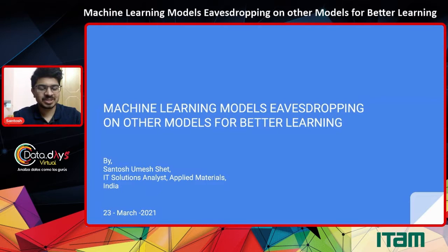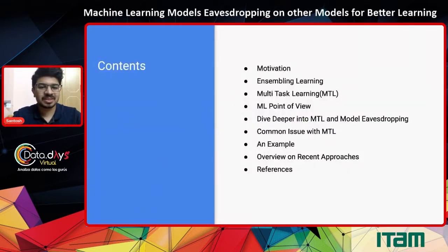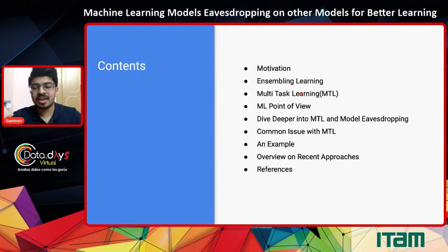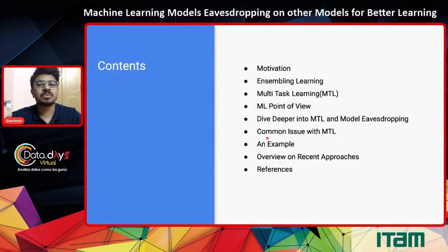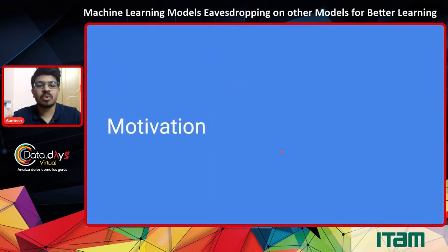Let's quickly dive into today's talk. We'll try to build an intuition of how we can relate human learning with machine learning, how multitask learning came into being from ensemble learning, then understand deeper concepts of multitask learning — the advantages, how to train them with multiple datasets, how to handle multiple losses. There'll be a lot of questions in this part, but an example towards the end should cover most of them, so I'd suggest keeping questions towards the end.